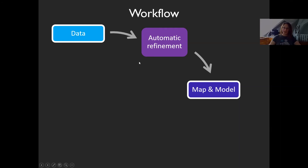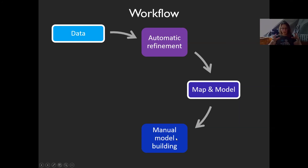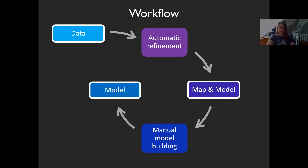You get a model, and depending on your starting model you may need to feed one in unless you use an automatic model builder. Then you do manual model building in a program like Coot — putting in the right side chain, mutating what needs changing, adding waters, adjusting the model as a chemist. This improved model goes back into automatic refinement together with data to generate a new map calculated from the phases of the new model. You repeat this cycle many times.